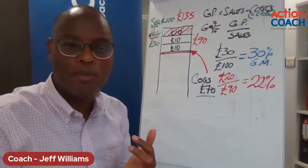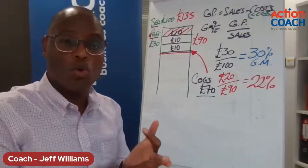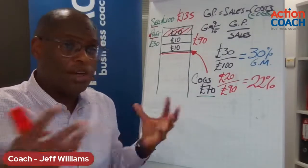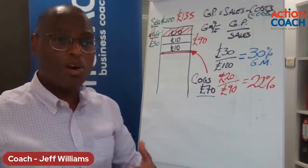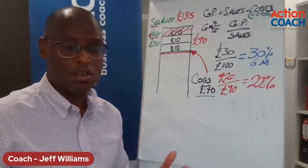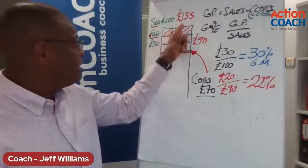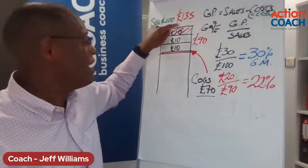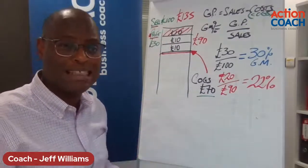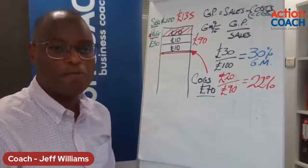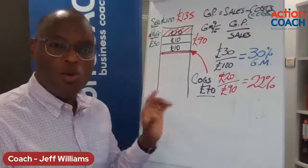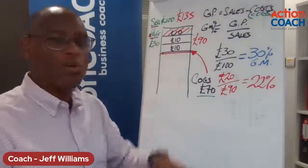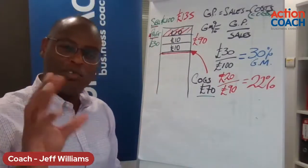Selling more product often means you've got to spend more time making it, employ more people, buy more raw materials, store more raw materials, and your delivery costs go up. To get £135 of sales rather than £100, you may now have to employ more people — more fixed expenses, more admin staff, or another salesperson. Key lesson: know your gross margin, know your gross profit, and stop discounting — discounting wipes out your profitability.